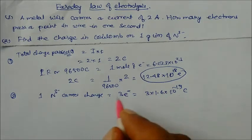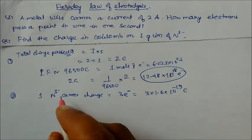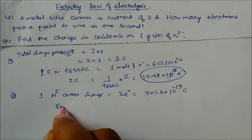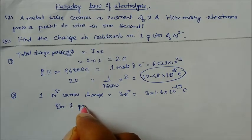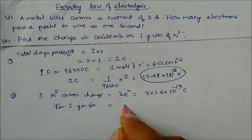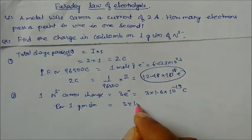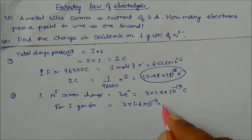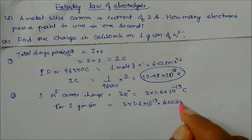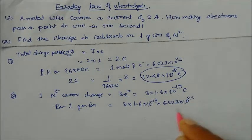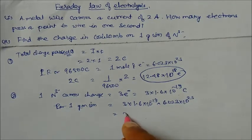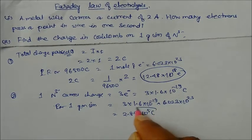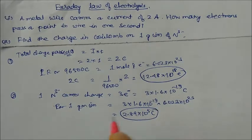They are asking for one gram ion, which is one mole. So for one mole, it is 3 × 1.6 × 10⁻¹⁹ multiplied by Avogadro's number, which is 6.023 × 10²³. So we get the answer: 2.89 × 10⁵ coulomb. This is our answer.